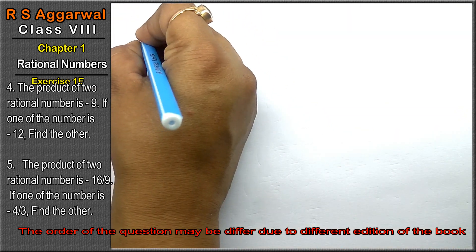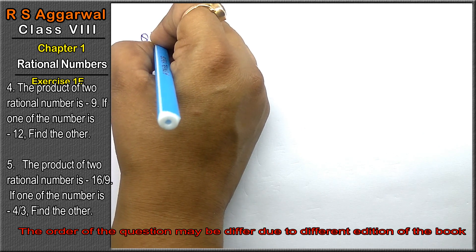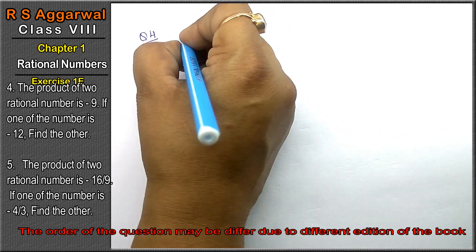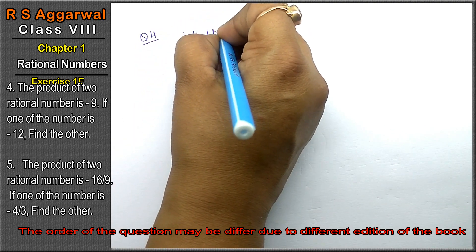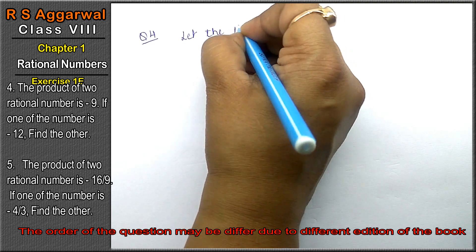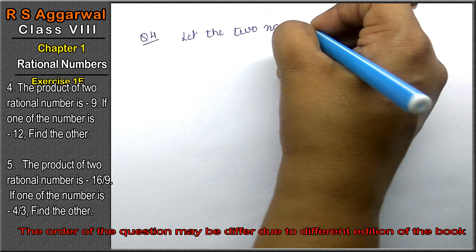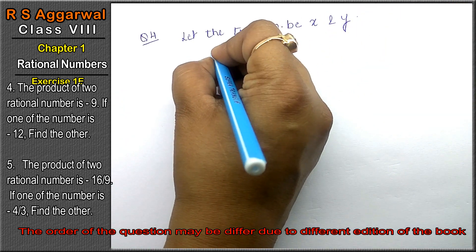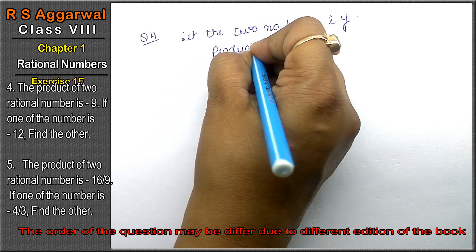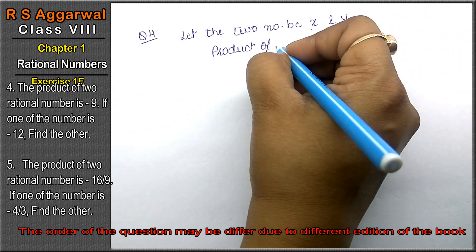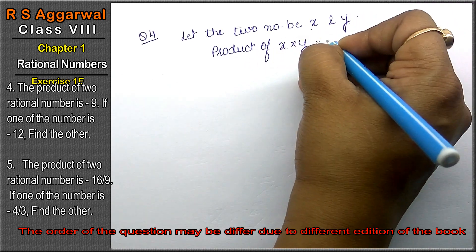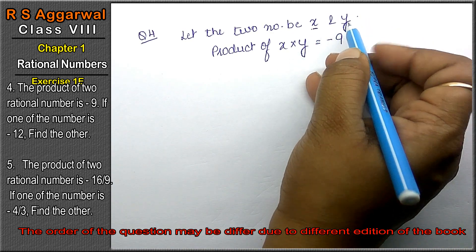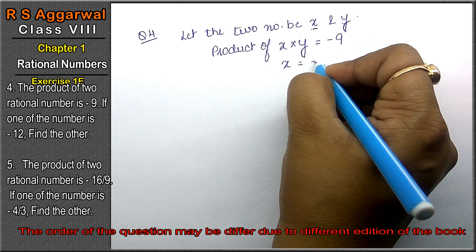Let's do question number 4 of Exercise 1E on rational numbers. Question 4: the product of two rational numbers is -9. Let the two numbers be x and y. One of the numbers, x, is -12. Find the other.